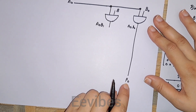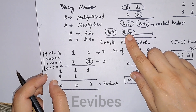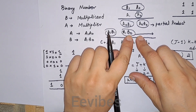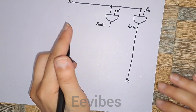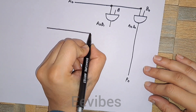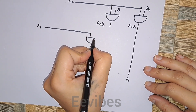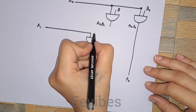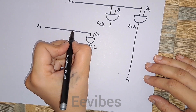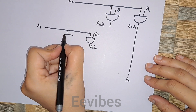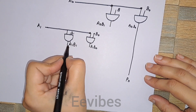In the next step we obtain the other partial product involving a1. We take another wire marked a1 and multiply it with each bit of the multiplicand: b0 gives a1·b0, and b1 gives a1·b1. In this way we have obtained two partial products.